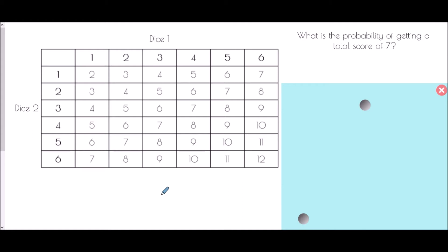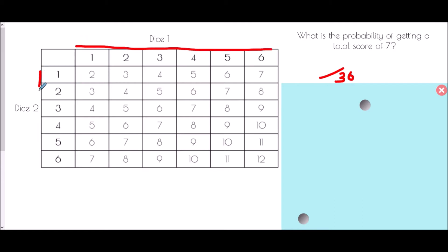We want to find the probability of getting a total score of 7. The first thing we need to know is how many different outcomes are possible — that will be the denominator of our fraction. Counting up: there are 36 different outcomes. Another way to find this is to think how many outcomes there are on each dice — 6 on this dice and 6 on this dice, so 6 times 6 gives us 36, the number of different outcomes.